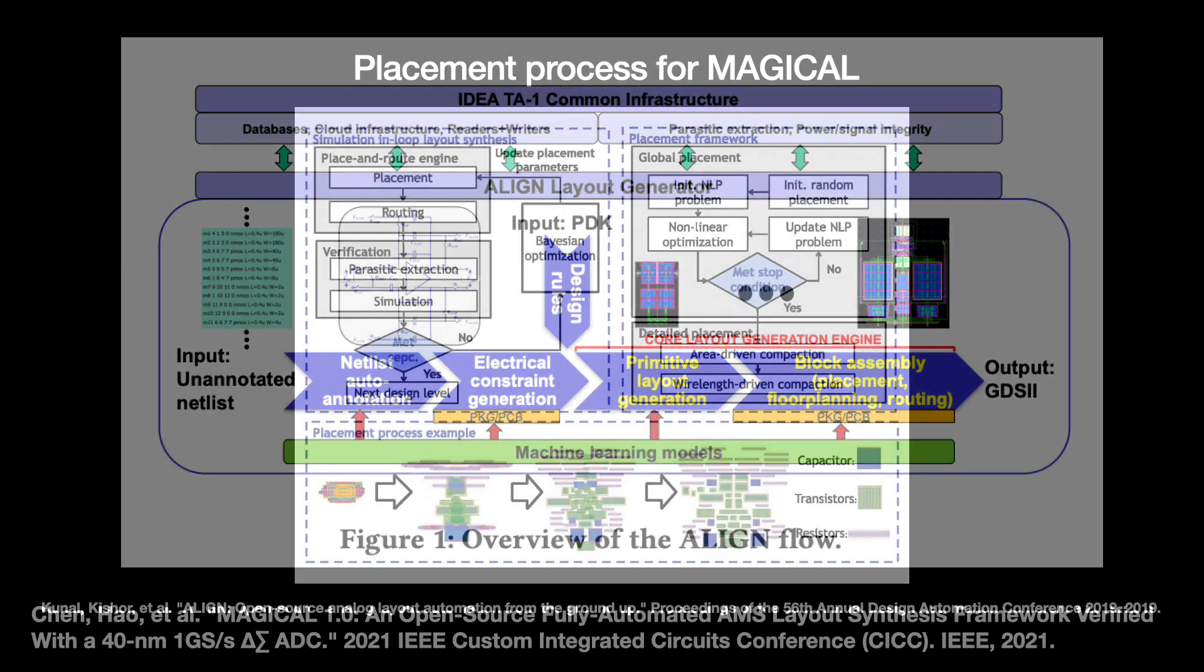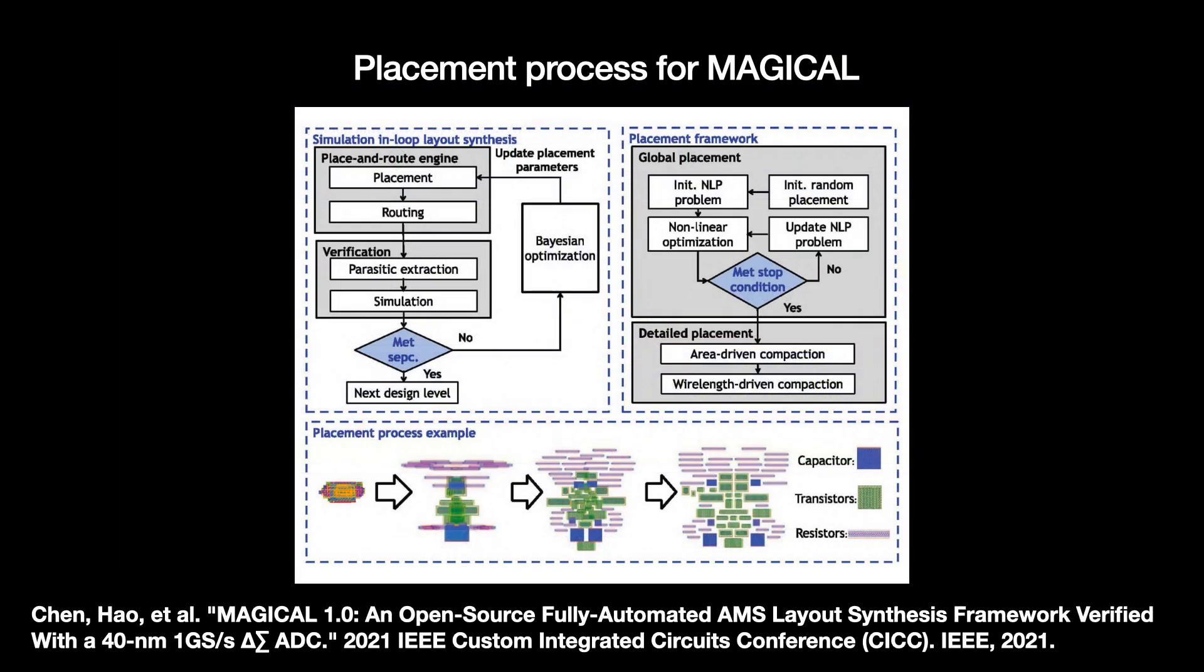Another notable one is MAGICAL, an open source, fully automated analog and mixed signal layout system. It uses gradient descent, an optimization algorithm for training machine learning models to iteratively place the devices and wires. There are two big issues with these open source solutions, however.